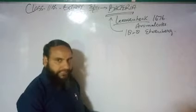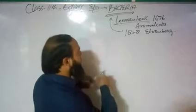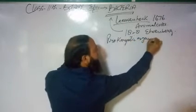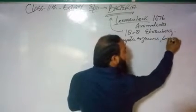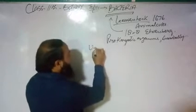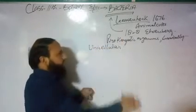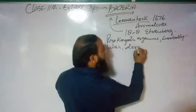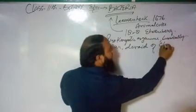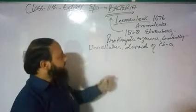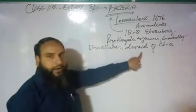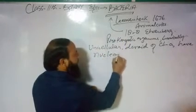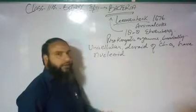Bacteria are basically unicellular organisms. They have a nucleoid — not a true nucleus. The nucleoid is present but it is not a well-developed true nucleus as found in eukaryotes.